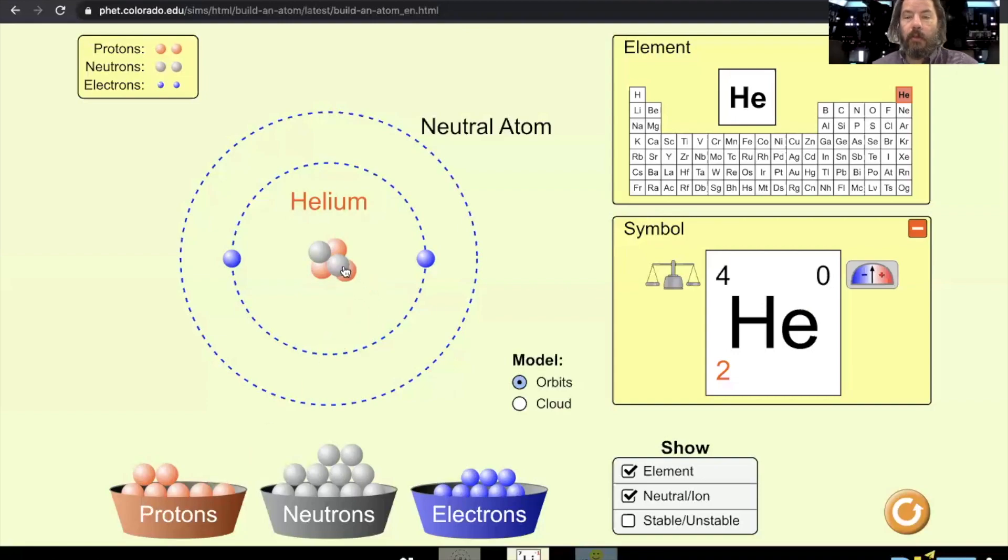And then if I added another proton, we actually get lithium, like your lithium ion batteries. Lithium is one of the main chemical elements used, and in general it has four neutrons, three protons, and three electrons.